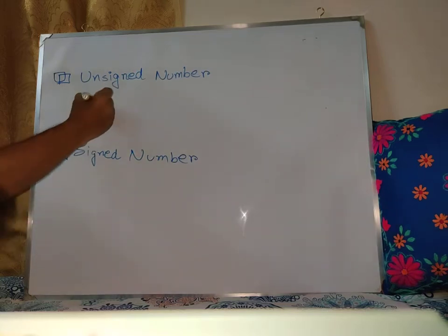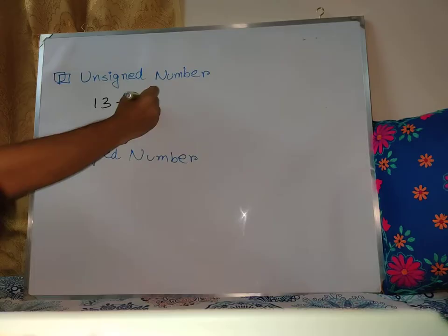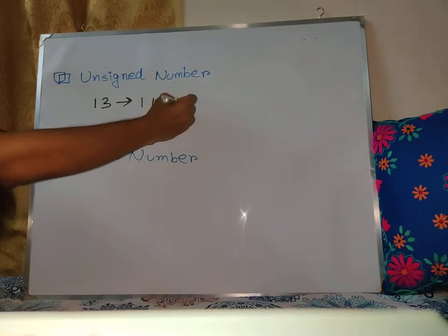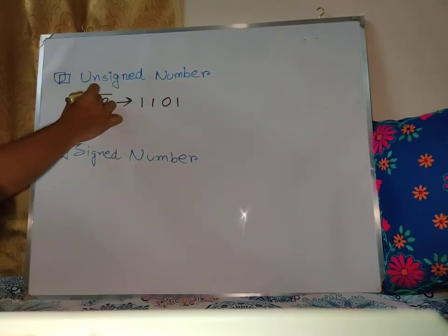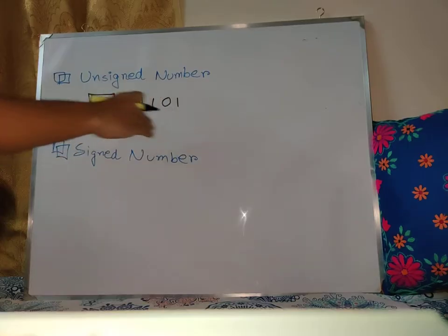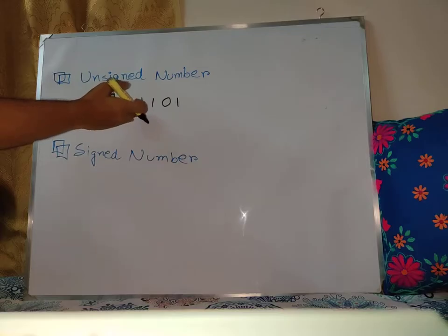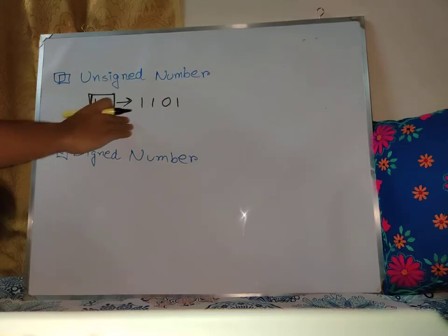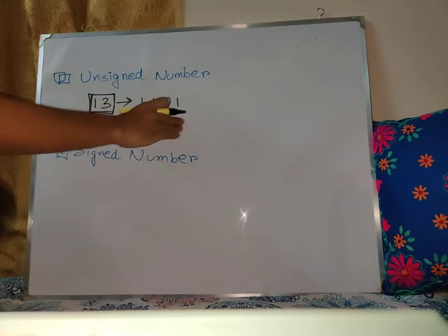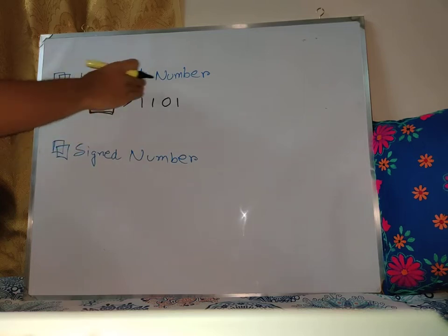Suppose we have said only 13. So 13 is a binary number — it's 1101. If we have 13, we have a binary number, and I'm not considering it as plus 13 or minus 13. So it's only 13, and it's called an unsigned number.